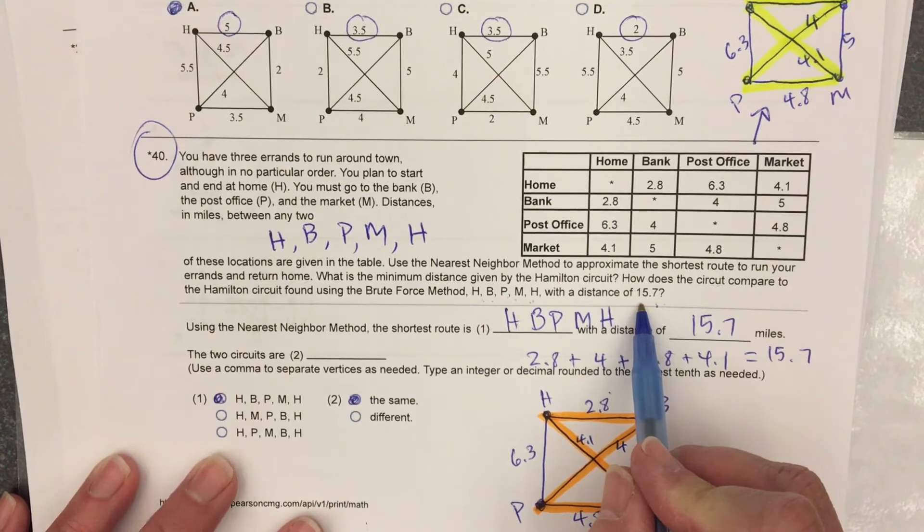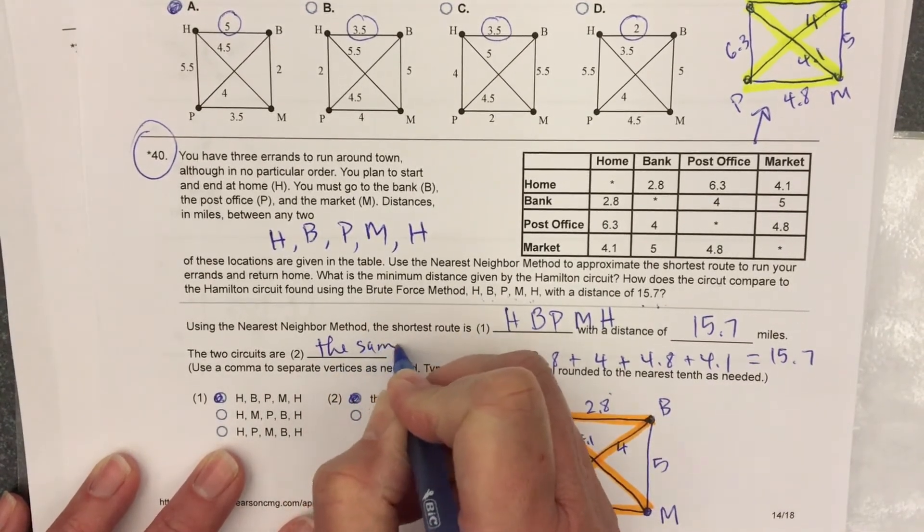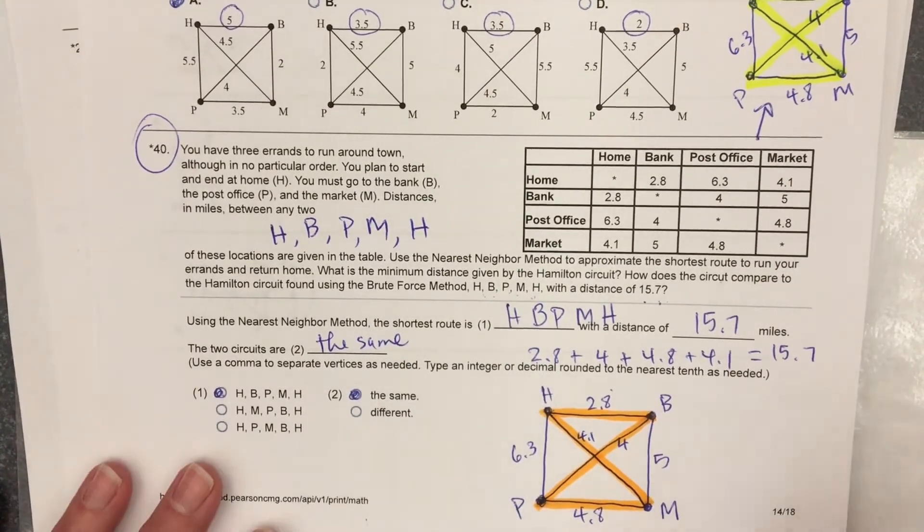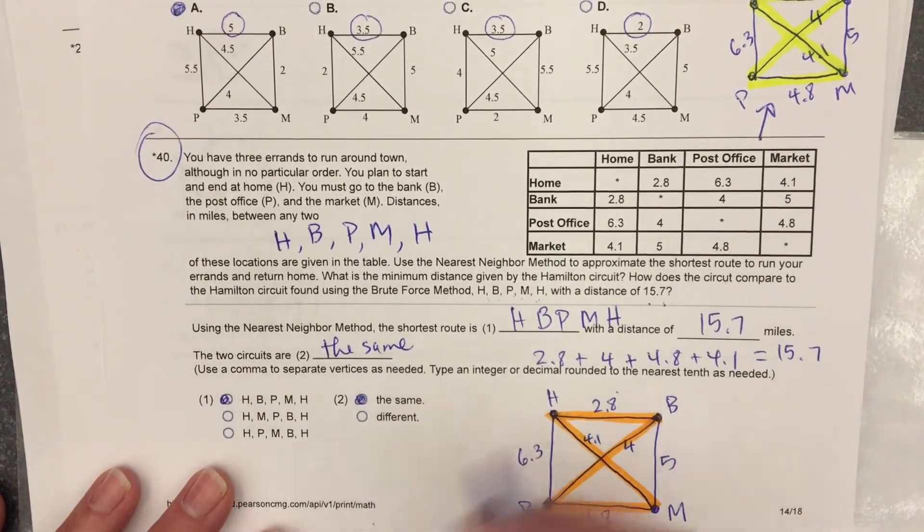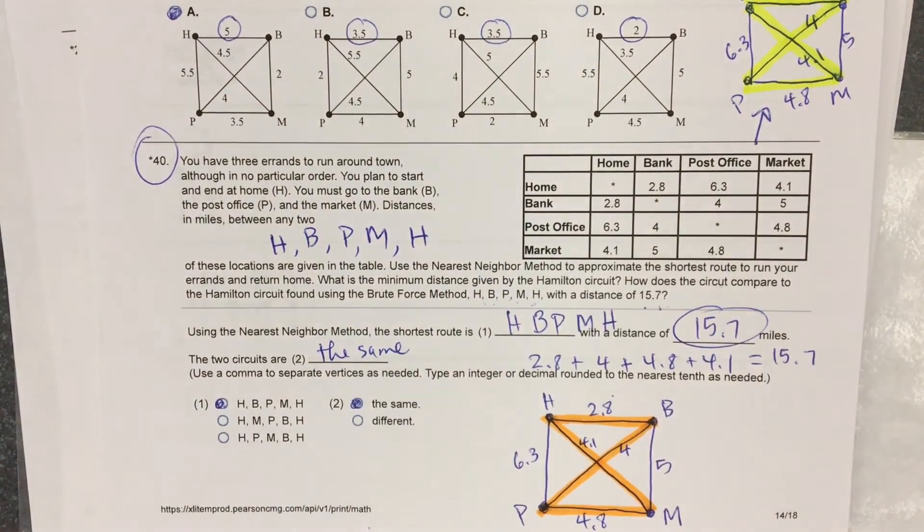Is that the same as the one we got? Yes. I didn't add up my numbers, but they kind of told me in the problem it would be 15.7 because they're the same.